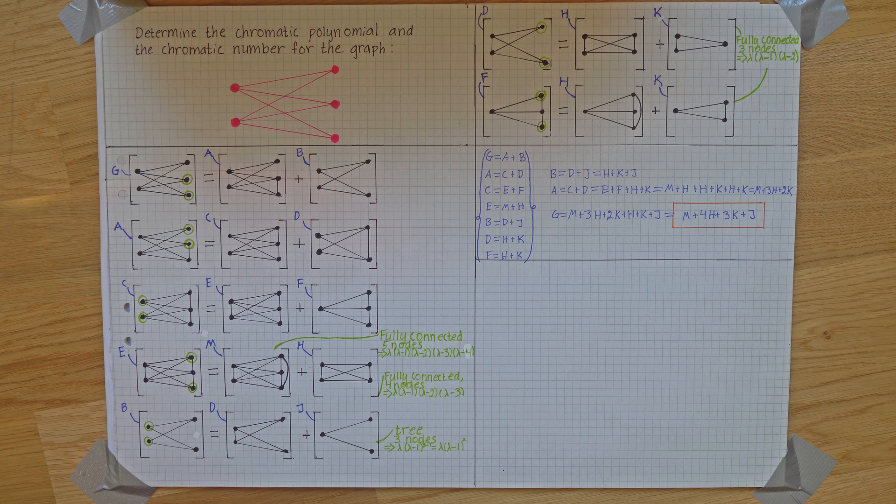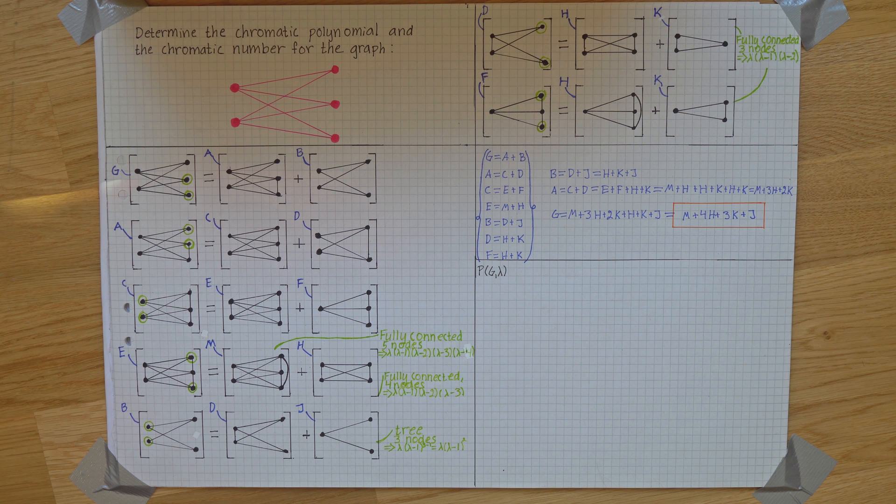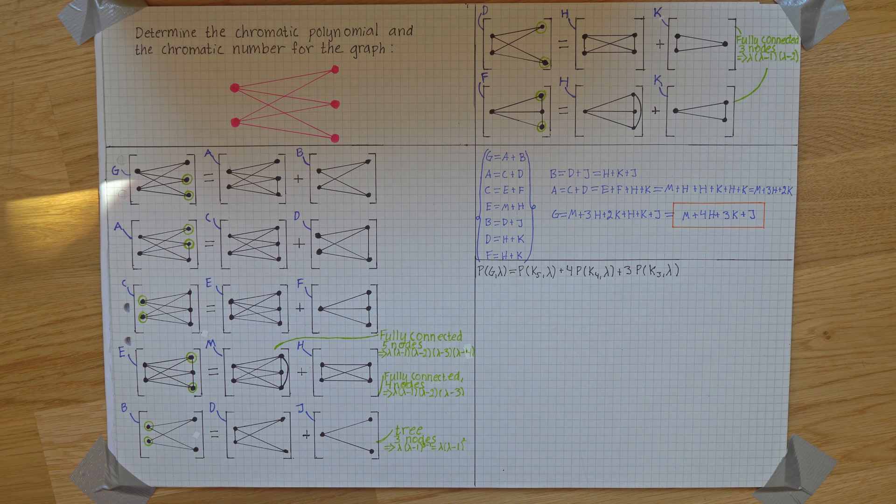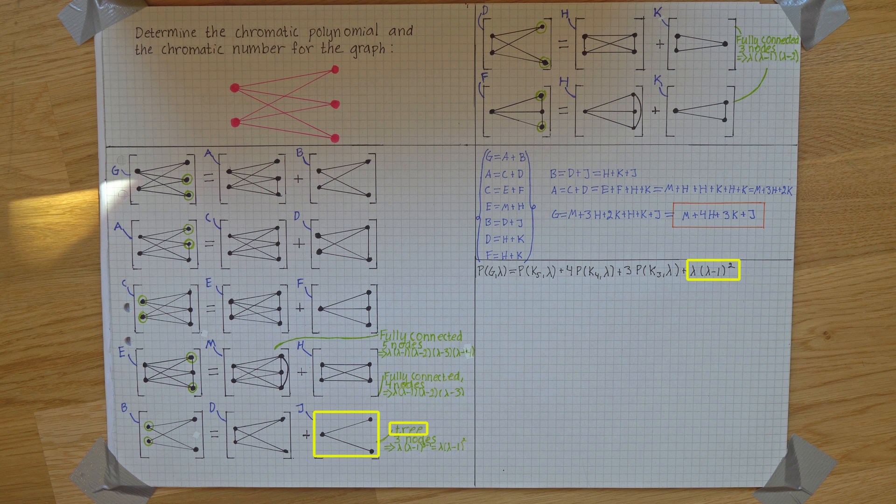That means that we should be able to put together the chromatic polynomial for the full graph. We got one of M that was the fully connected one with five nodes, 4H that had four nodes, 3K that had three nodes and one of the J that was a tree with three nodes.